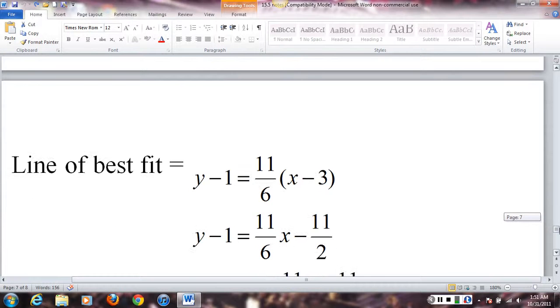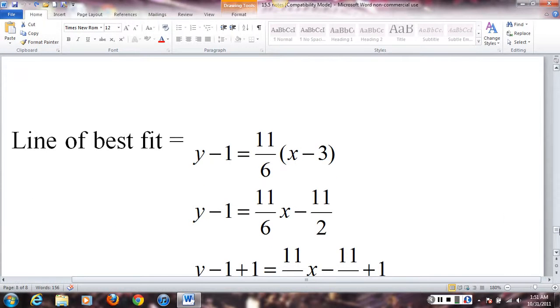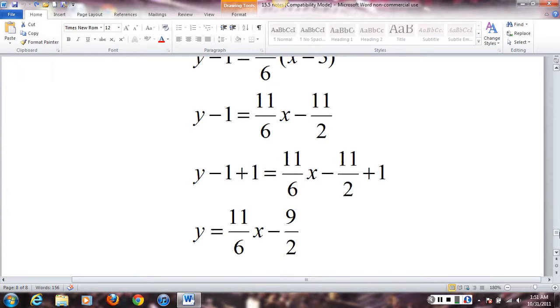Now, I'm going to find the line of best fit. So, I'm using my formula. I chose the point (3, 1). Again, you could have chosen (9, 12). It doesn't matter. I did my math. And I end up with y = 11/6 x - 9/2. And that would be what I'd want you to answer. You just tell me y = 11/6 x - 9/2. And that would be the final answer.